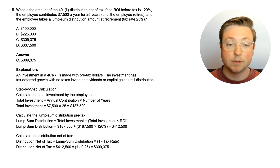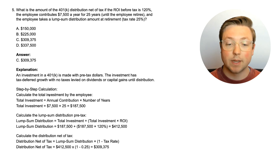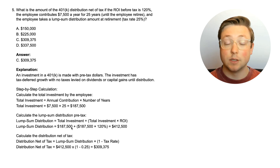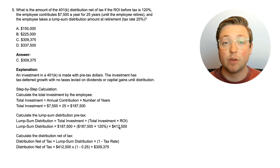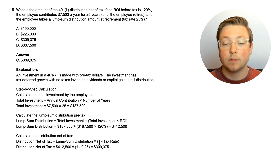The answer is C, $309,375. An investment in a 401k is made with pre-tax dollars, with tax-deferred growth — no taxes on dividends or capital gains until distribution. First, calculate the total investment: $7,500 times 25 years equals $187,500. With an ROI of 120%, the lump sum before taxes is the total investment plus the investment multiplied by 120%, which totals $412,500. Since this is a lump sum distribution, we apply the tax: $412,500 multiplied by (1 minus 25%) gives us $309,375.